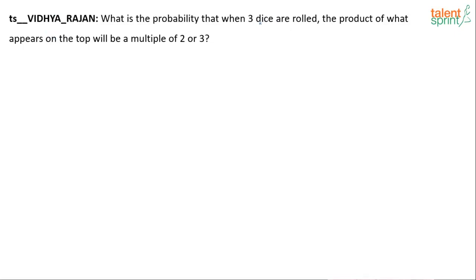We have got three dice. A die is a six-faced cube which has got numbers one, two, three, four, five, six marked on it — one on each of these faces. So it's a game of three dice. You roll all three of them together. What is the probability that the product of what appears on top will be a multiple of two or three?